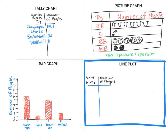Those are the three representations that are all related. A line plot may be a little bit different. I'm going to do a new tally chart for this line plot, because tally charts can be used for picture graphs and bar graphs, or for line plots — it just looks a little different. I've got 'points scored' and 'number of players.' I'm going to pick some random, which means arbitrary, point values that somebody scored in a basketball game: six points, eight points, ten points, and twelve points.